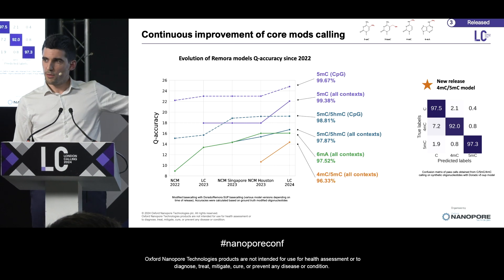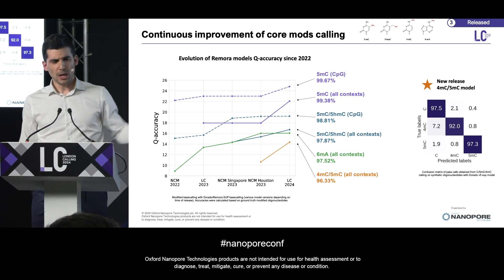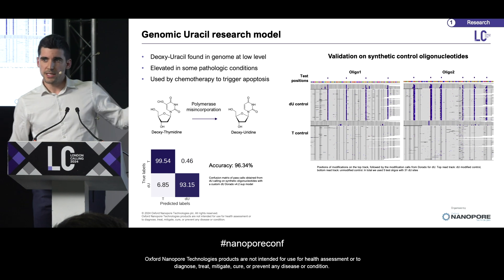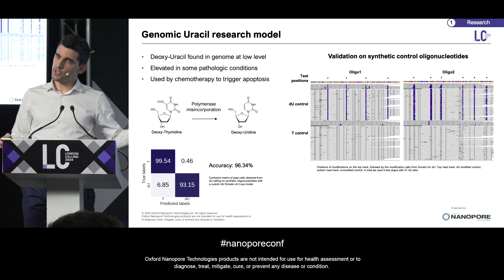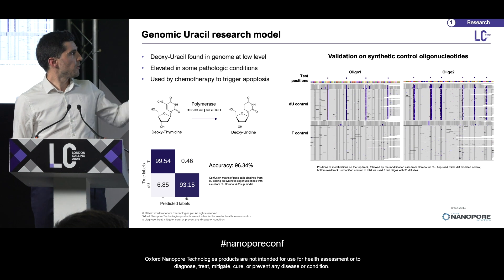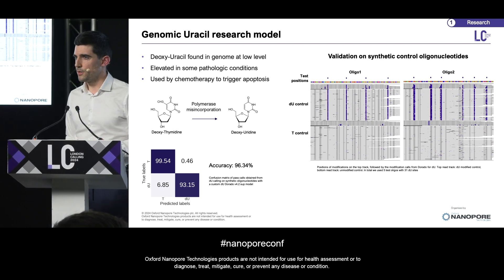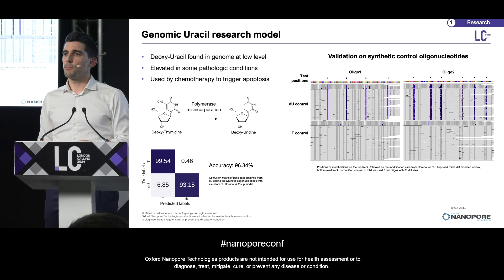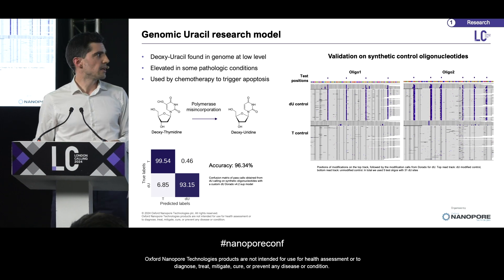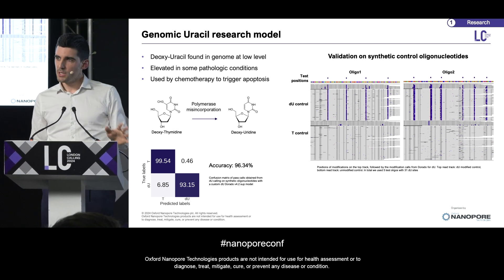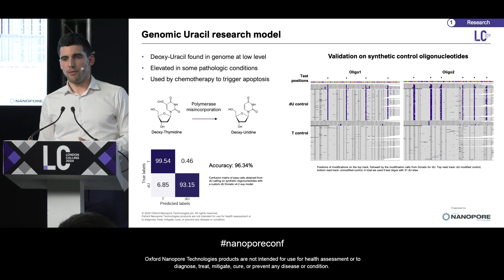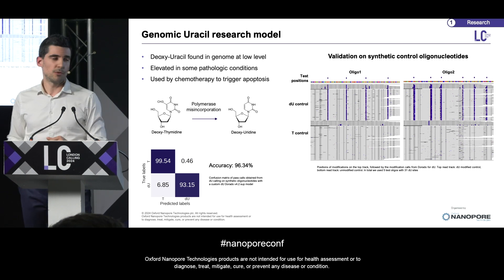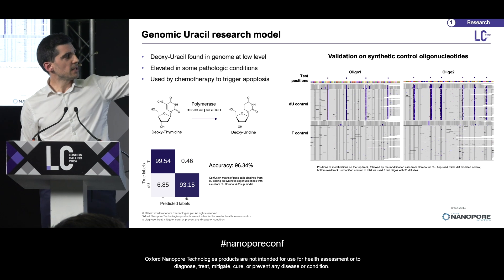Now that we've done these core modifications, we can start looking further. That's what we've done by starting to investigate other modifications — in this case, more damaged bases. One that we've been working on is deoxyuracil; we've got some experience on this one. It has some relevance in metabolic diseases as well as cancer. We trained a relatively basic model compared with the models we use for other modifications, and we were really pleased to see that we could reach 96% accuracy from the first attempt.